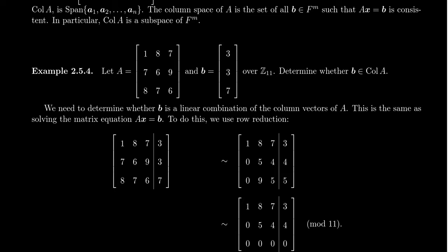I want to remind us of an example of how we would do such a thing. In this example, take the matrix A to be this 3 by 3 matrix: 1, 8, 7, 7, 6, 9, and 8, 7, 6. And then take the vector 3, 3, 7. We're going to work mod 11 in this example.